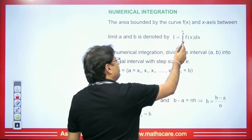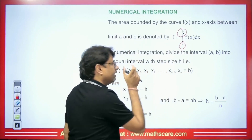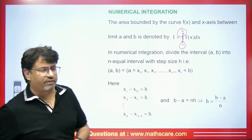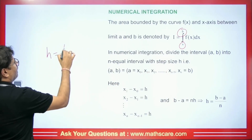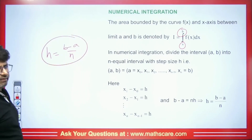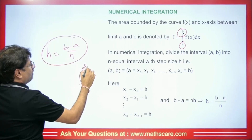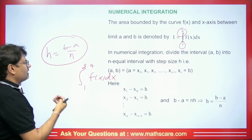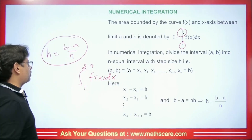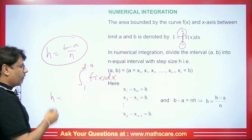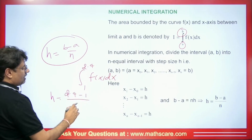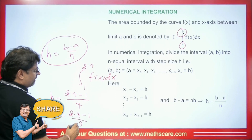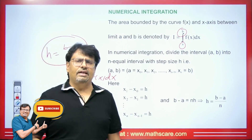When we do integration of any function, we first divide the limit into small intervals. The formula is: H equals the upper limit minus the lower limit, divided by N (the number of intervals). For example, if the range is from 1 to 2.4 and you divide it into 4 intervals, H equals (2.4 minus 1) divided by 4. If you divide into 2 intervals, H equals (2.4 minus 1) divided by 2. This is the method to divide into intervals.